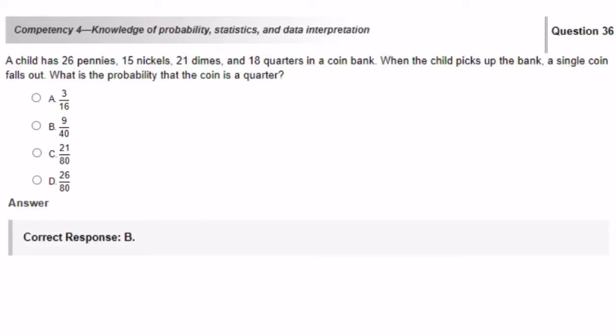A child has 26 pennies, 15 nickels, 21 dimes, 18 quarters in a coin bank. When the child picks up the bank, a single coin falls out. What is the probability that the coin is a quarter? The first step would be to figure out the total number of coins. So let's add them up. 26 plus 15 plus 21 plus 18 is going to get us 80 coins.